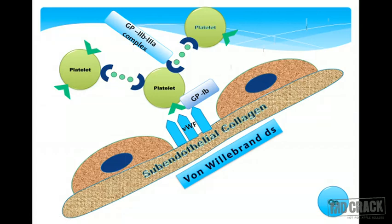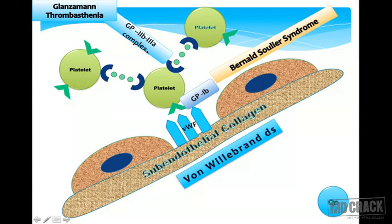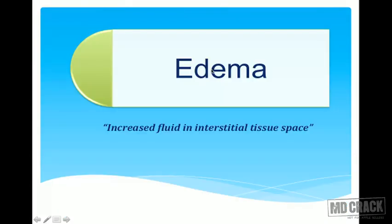Three disorders can be explained from this: deficiency of von Willebrand factor causes von Willebrand disease; deficiency of glycoprotein Ib causes Bernard-Soulier syndrome; and deficiency of glycoprotein IIb/IIIa complex results in Glanzmann thrombasthenia — weakness in the attachment of platelets. Remember this diagram to answer many MCQs. Von Willebrand factor bridges the platelet and subendothelial collagen, and deficiency of glycoprotein IIb/IIIa causes Glanzmann thrombasthenia.